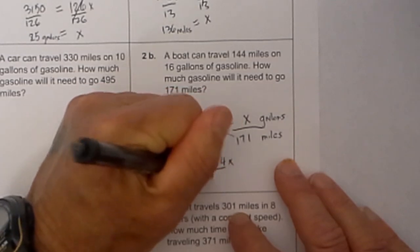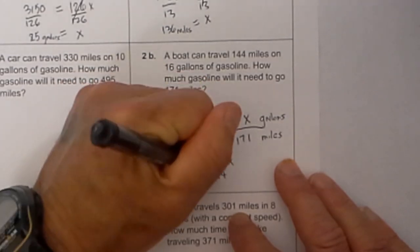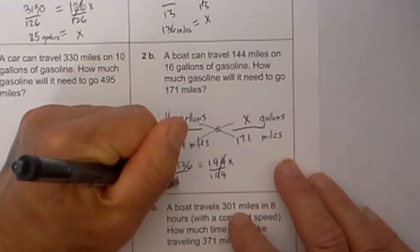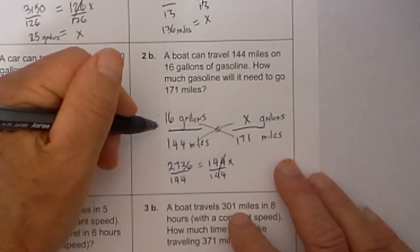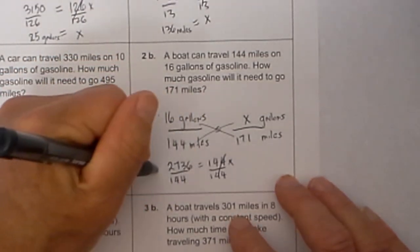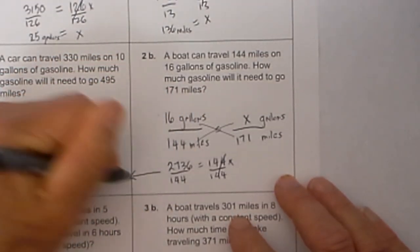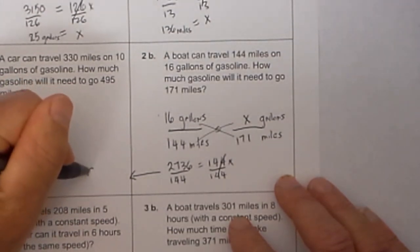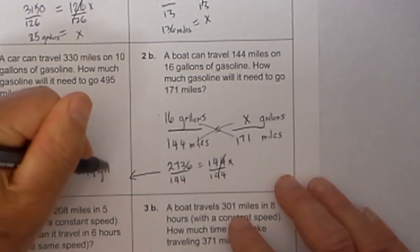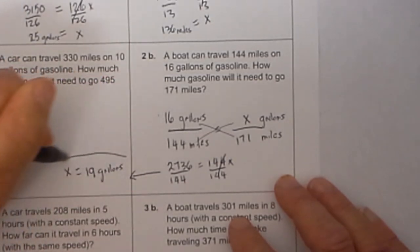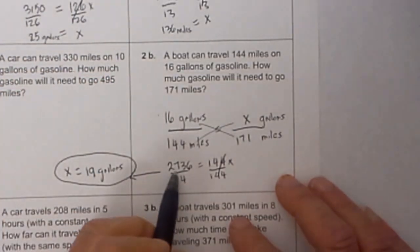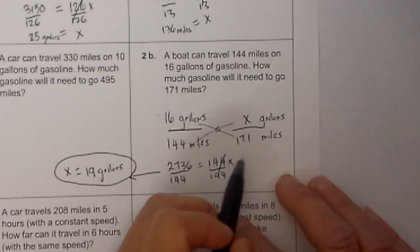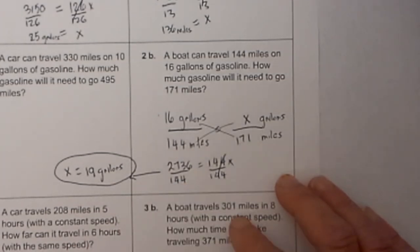We know to isolate the x, we will divide both sides by 144. These cancel and 2736 divided by 144 is equal to 19 gallons, so it will take 19 gallons to travel 171 miles.